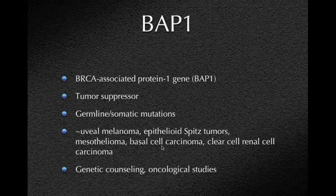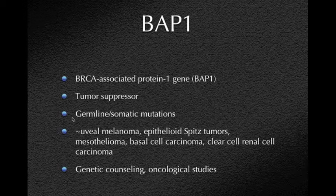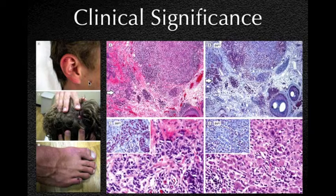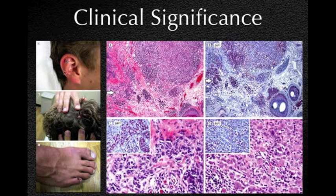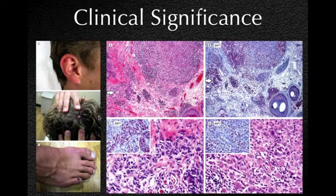It is important to do genetic counseling and oncological studies. If it is a germline mutation, there could be patients presenting where you, as a dermatologist, can see that a patient has these pedunculated nevi that all look normal. However, if you biopsy one and find this histology with the BAP1 mutation, you can alert the patient that he or she might develop uveal melanoma or renal cell carcinoma, and early detection of those tumors could save the patient's life.